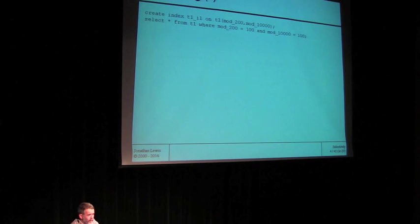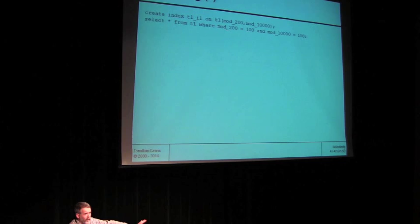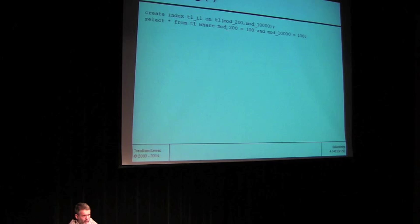If you work through the arithmetic carefully, you'll realize that every time mod 10,000 is equal to 100, mod 200 is also equal to 100 — there is 100% overlap between them. So this will return 100 rows. However, the optimizer assumes independence of predicates as a general principle. So the optimizer says: there are 200 possibilities here, 10,000 there, that's 2 million possible combinations — we should get no data whatsoever. At least, that's what it would have said in something like Oracle 10.1.